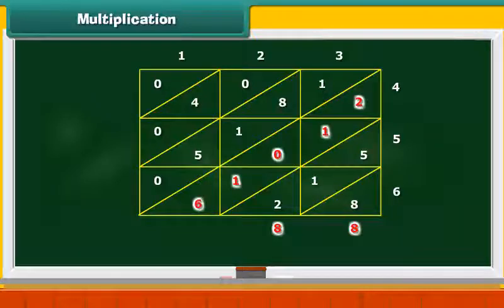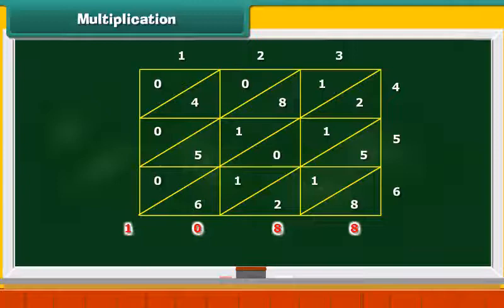The third diagonal has 5 elements: 2, 1, 0, 1 and 6. Their sum is 10. Write 0 and carry over 1 to the next diagonal.